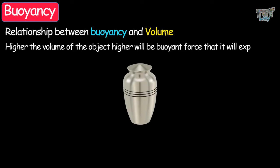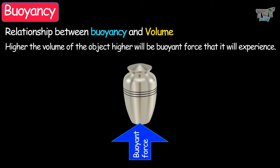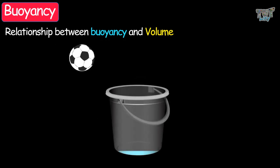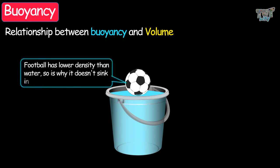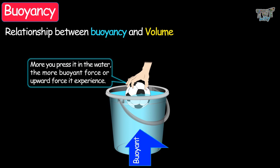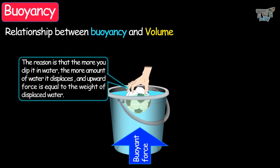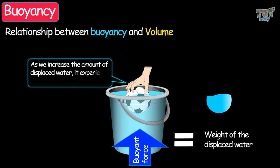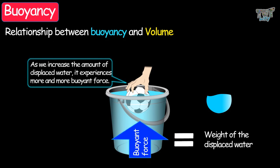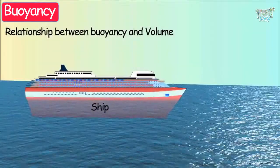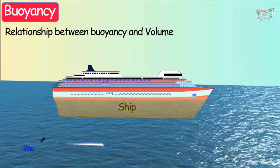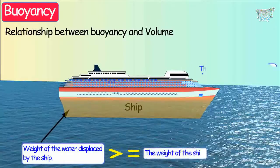Now let's learn the relationship between buoyancy and volume. The greater the volume of the object, the greater the buoyant force it will experience. Take a football and dip it in water — first, the football has a lower density than water, so it does not sink. Secondly, the more you press it into the water, the more buoyant force it will experience, because the more you dip it, the more water is displaced, and the upward force equals the weight of the displaced water. The shape of a ship is uniquely made such that it displaces an amount of water more than or equal to its weight, which is why it easily floats.